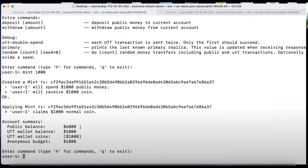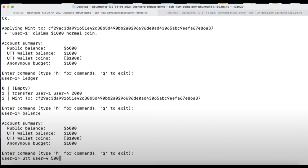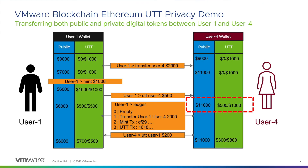After the minting, User 1 now invokes the UTT transfer function to transfer 500 private tokens to User 4. As a result, you can see on the User 4 private side that her wallet has now increased from zero to five hundred dollars.